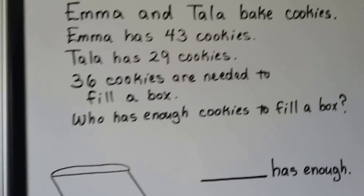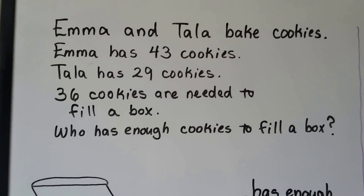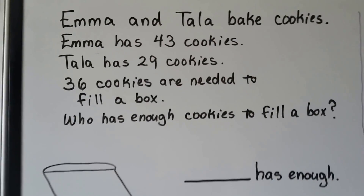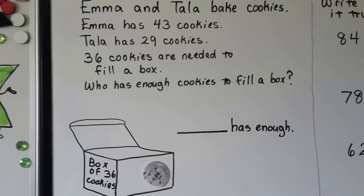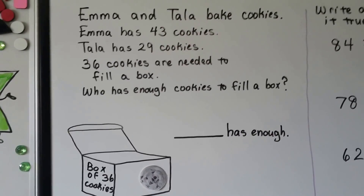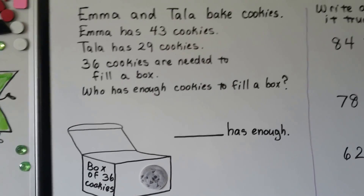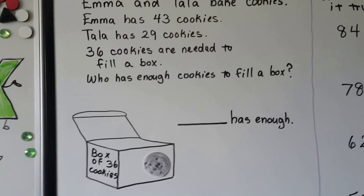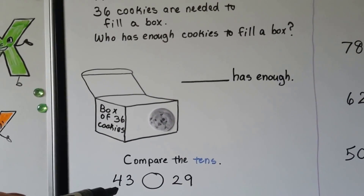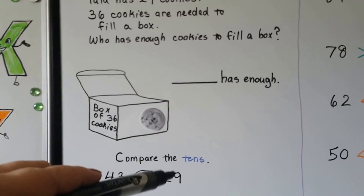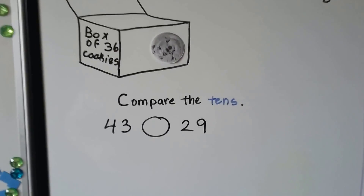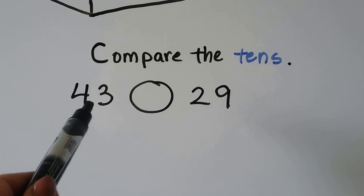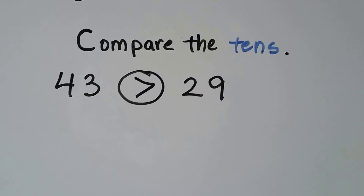Emma and Tala bake cookies. Emma has 43 cookies; Tala has 29 cookies. 36 cookies are needed to fill a box. Who has enough cookies to fill a box — Emma or Tala? Emma has four tens; Tala has two tens. 43 is greater than 29.